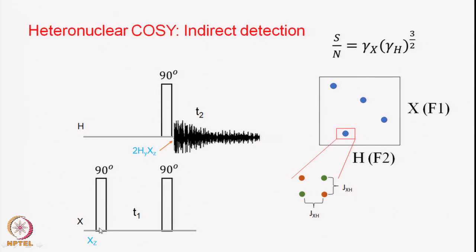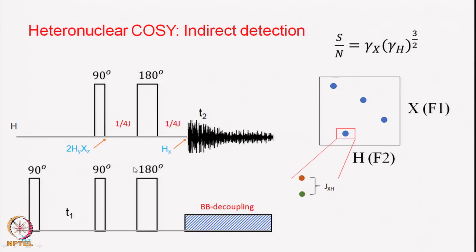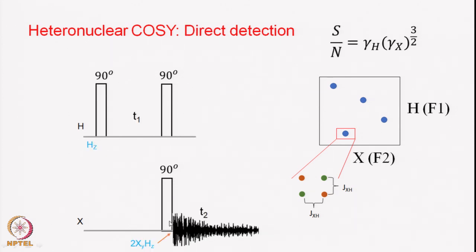In indirect detection, we start with the X magnetization, apply a 90-degree pulse to the X spin, and the X magnetization evolves during the T1 period. Then with a pair of pulses, you transfer the polarization to the proton. The relevant product operators are: you have XZ here, and at this point you create proton magnetization which is antiphase to X — the term 2HyXz. In the previous case also, you started with Hz and ended up with antiphase magnetization of the X spin, 2HyXz, which results in the antiphase nature of the fine structure in the cross peaks.